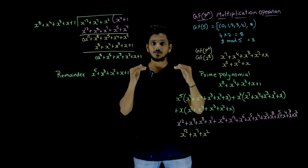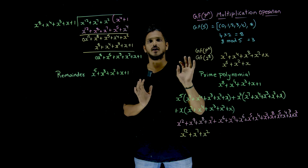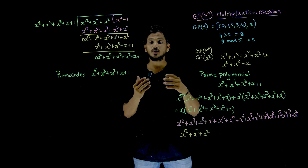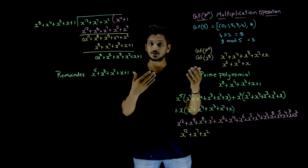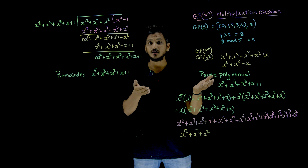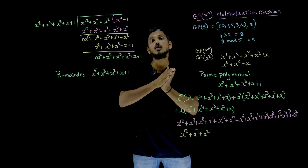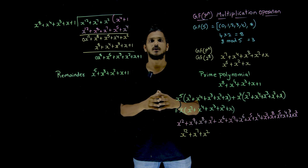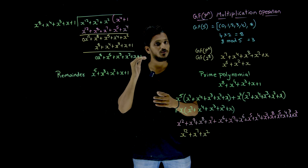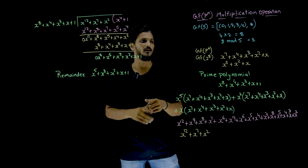Similarly, in GF of p power n, we will do the same concept applied here. But it is applied on polynomials. So you might get a bit confused. Watch it multiple times till you get the clarity.